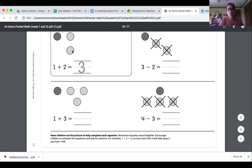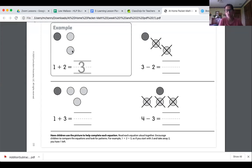So I'm going to count. One, two, three. I have three circles. I'm going to write a three on my line. So I know that one plus two equals three.